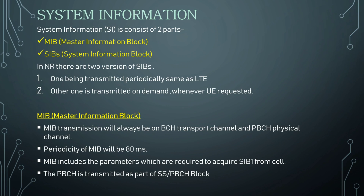System information consists of two parts: MIB (Master Information Block) and SIBs (System Information Blocks). In NR there are two versions of SIBs — one being transmitted periodically, as it was in LTE, and the other transmitted on-demand. The on-demand SIBs are only transmitted when the UE requests them.